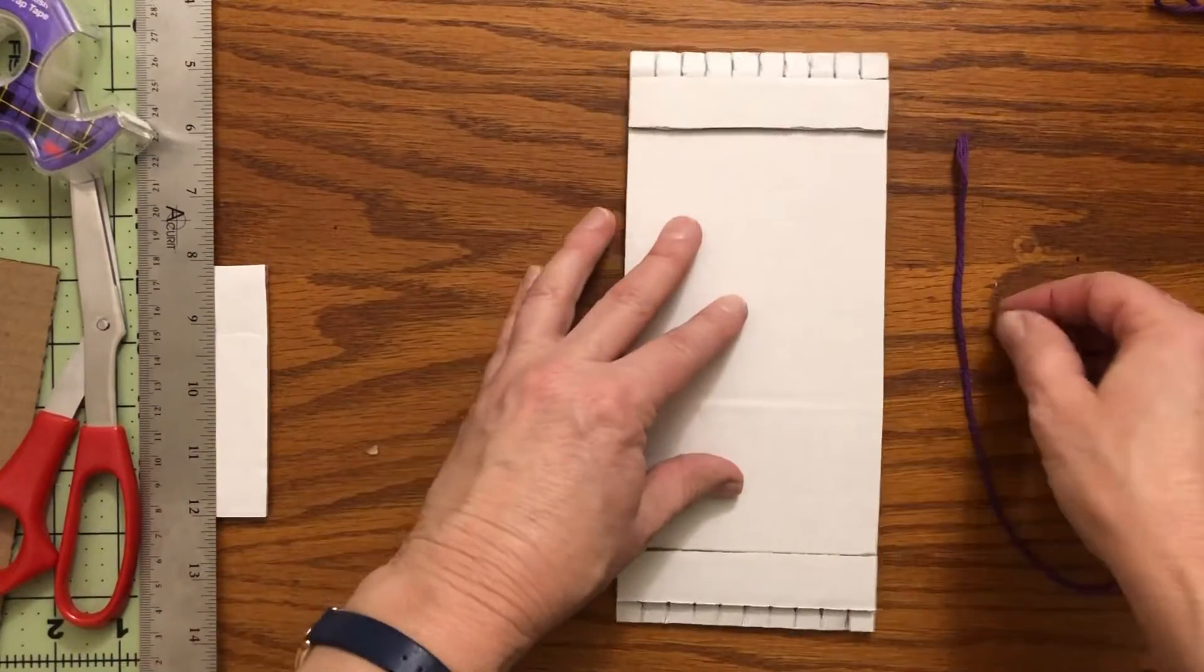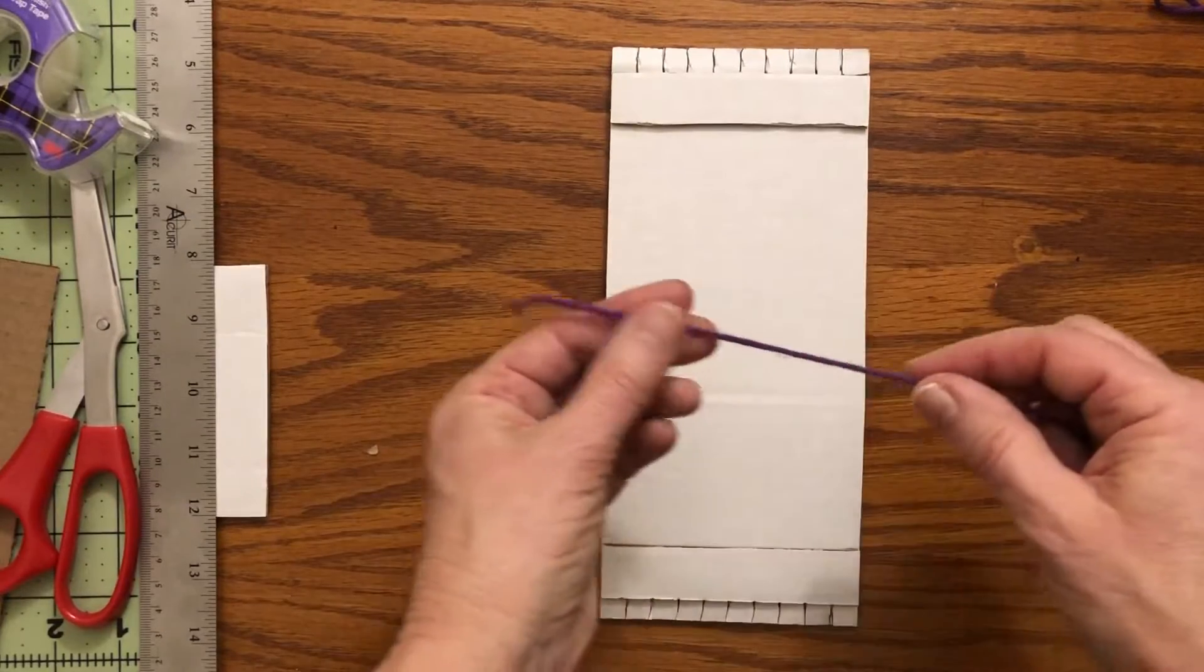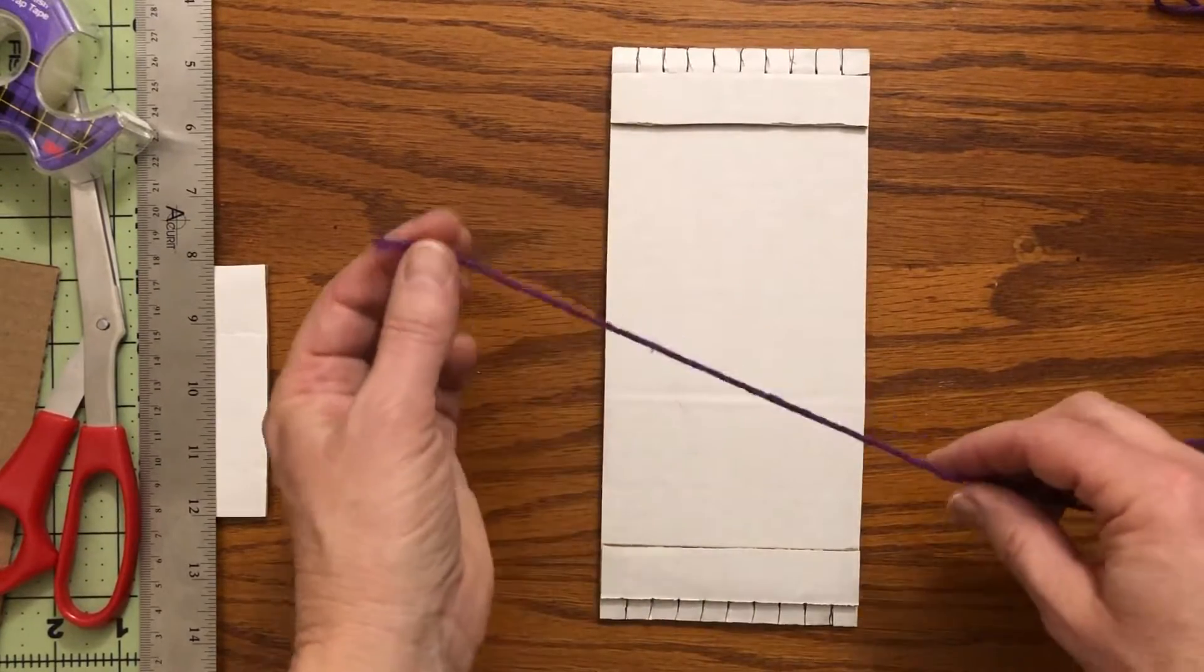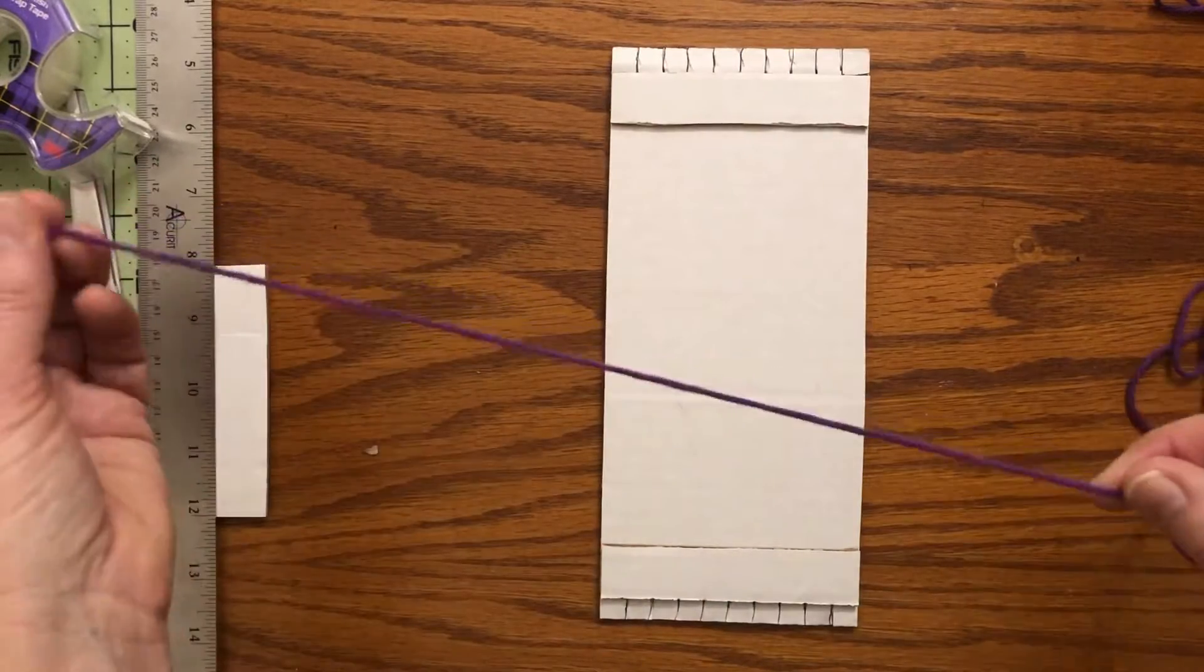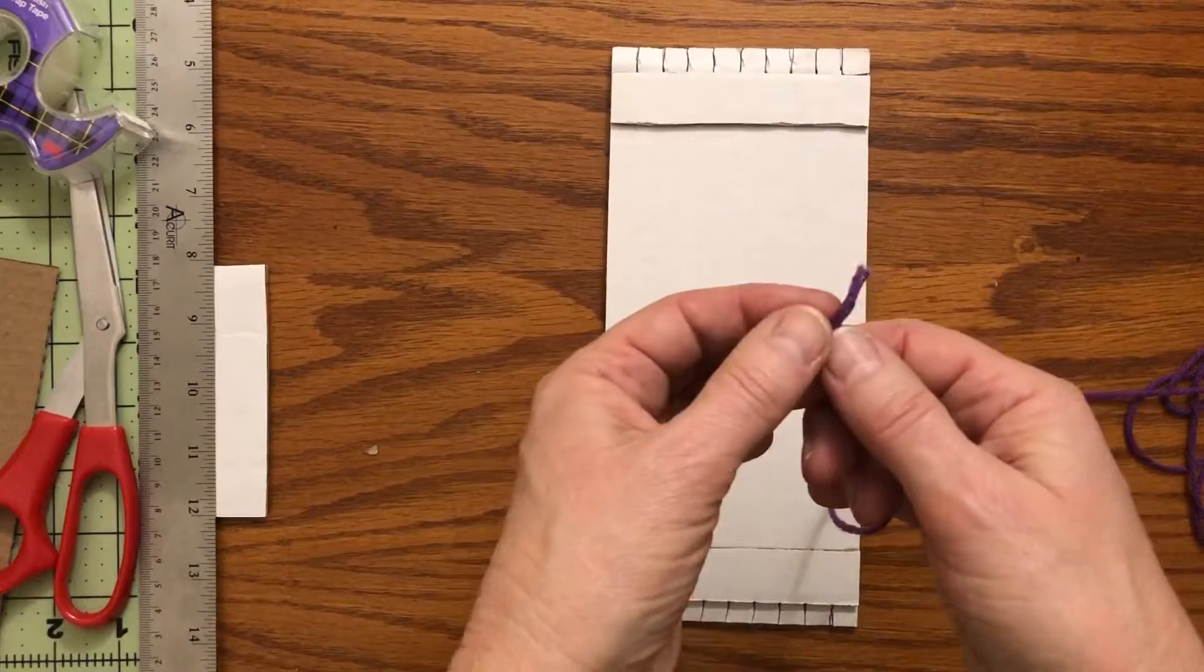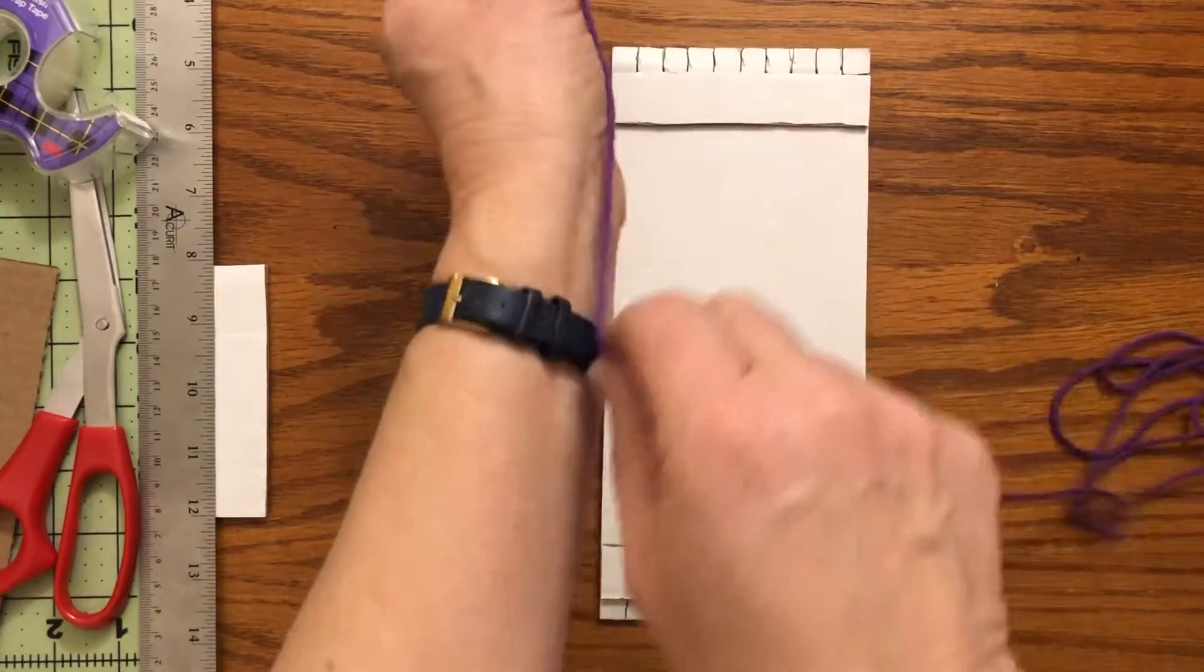So the next thing I'm going to do is I have this yarn here and I've already gone ahead and measured about six arm's lengths of yarn and then I cut it. So what I mean by that when I say an arm's length...